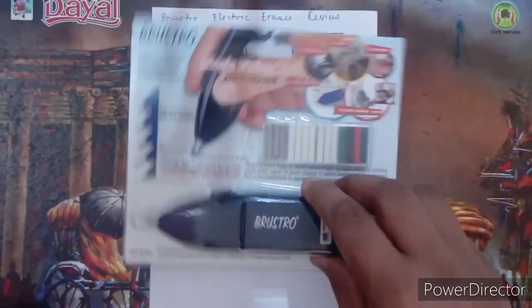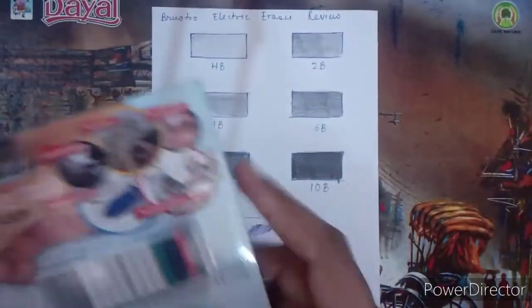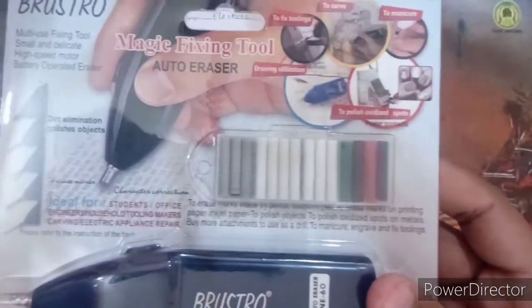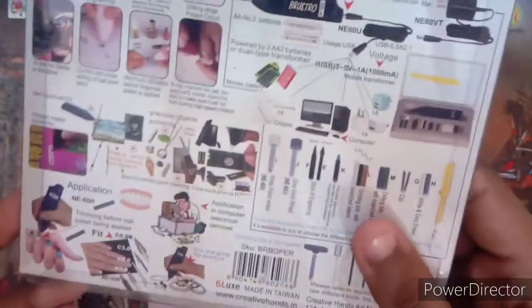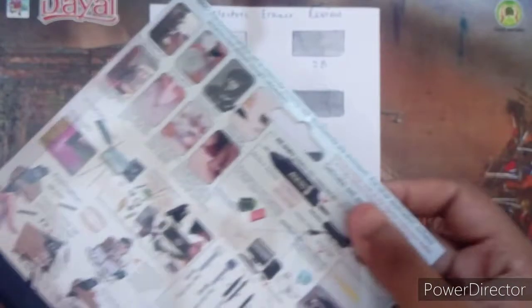This eraser can erase almost every pencil line from dark to light. This eraser comes in very simple packaging. Inside the packaging are the eraser refills and an electric eraser machine.